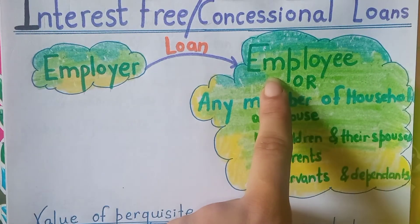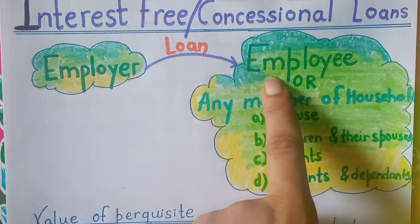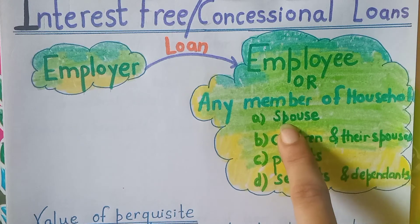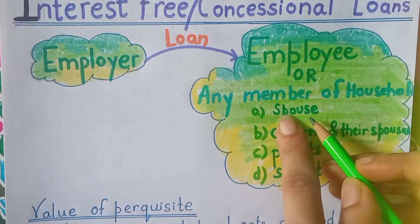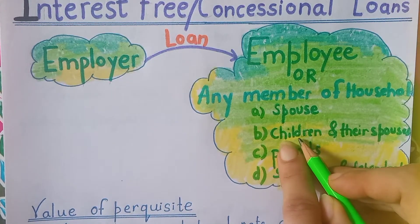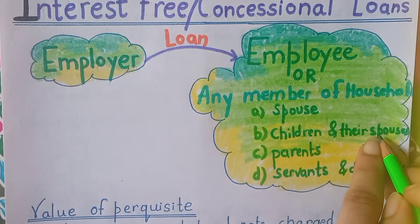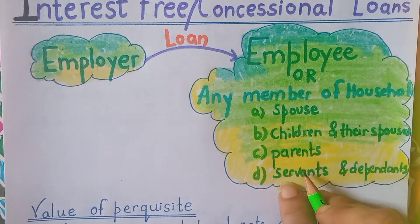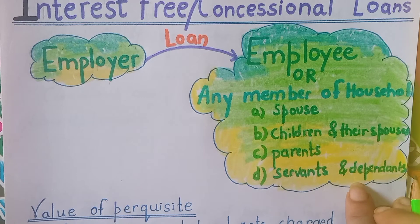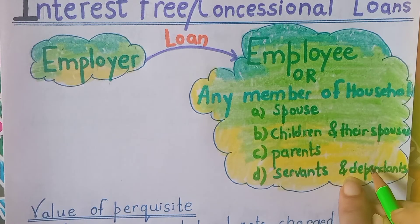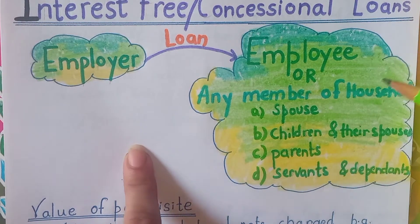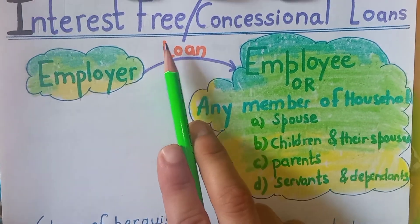Our employer has given the loan to the employee. Or if the employer has given a loan to a member of the household — which could be a spouse, husband or wife, parents, or any dependent — in all these cases the loan will be treated as a perquisite. This perquisite is called Interest Free or Concessional Loan.